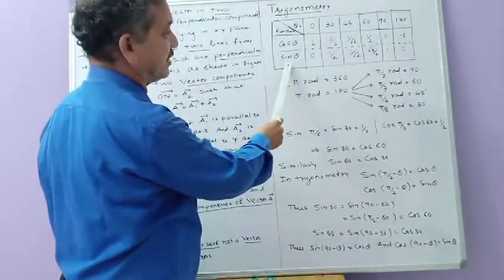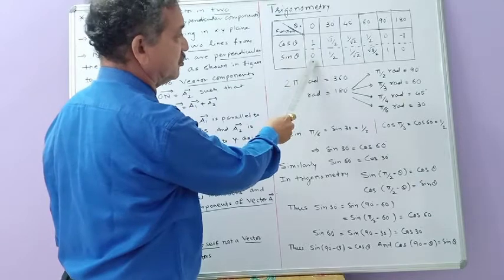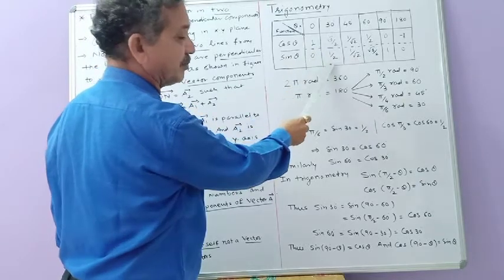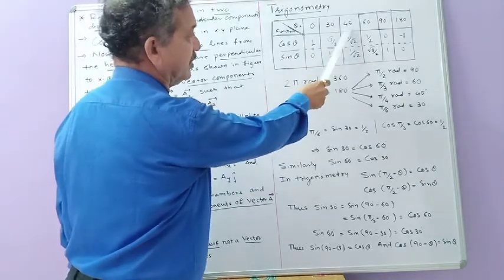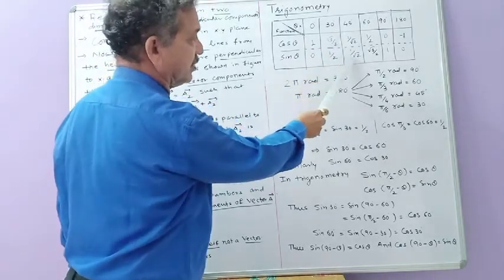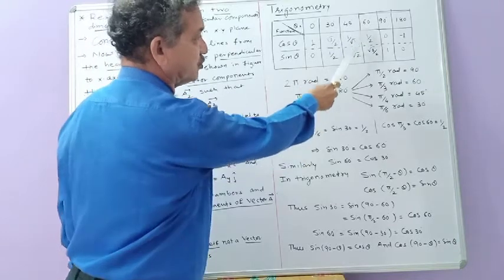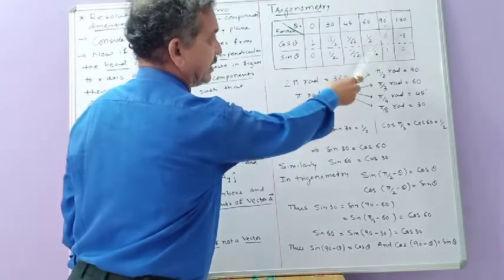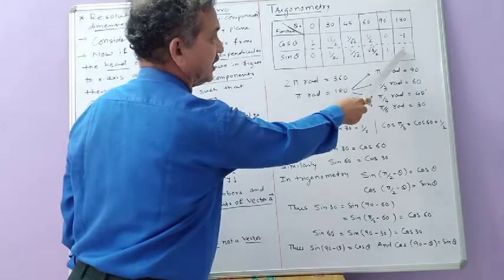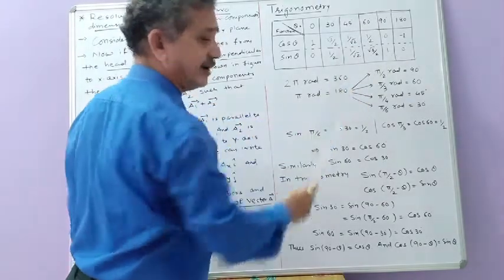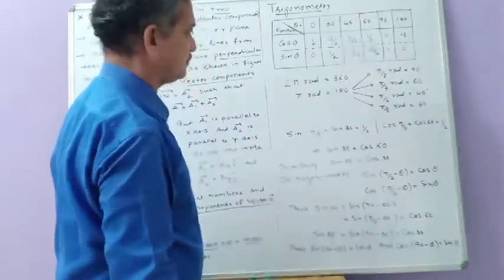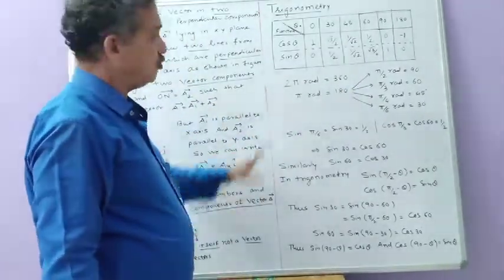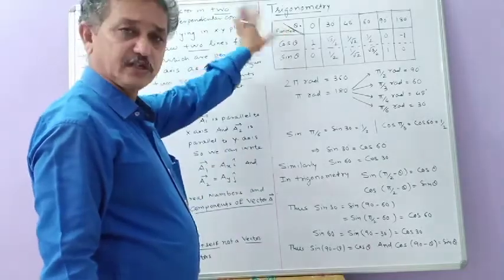Sin theta: sin 0° is 0, sin 30° is 1/2, sin 60° is √3/2, sin 90° is +1, and sin 180° is 0. So here you have studied what you studied in your root standard.